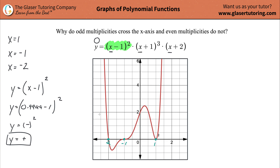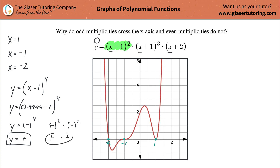Now you might say, okay, that's cool, but you only did the square — what happens if it's to the fourth power? Well, think about it. Imagine this was to the fourth power. What's a negative times a negative times a negative times a negative? You can break it into two negative squares: the square of a negative is positive, and a positive times a positive is positive. So it's still going to work. This pattern continues — every time you have an even multiplicity, an even power, it's never going to cross the x-axis. It's just going to touch it. Whether it touches from the top or the bottom will depend on a couple of other factors.